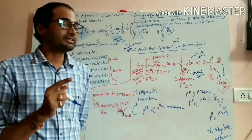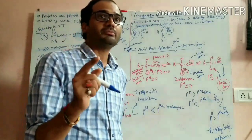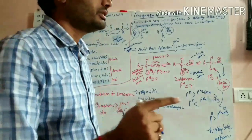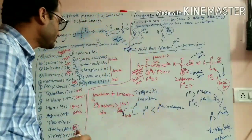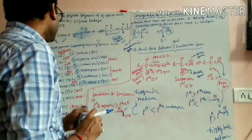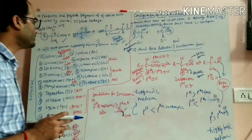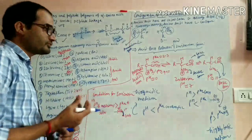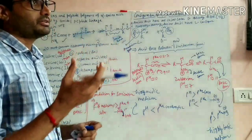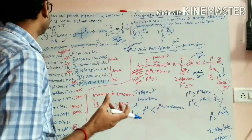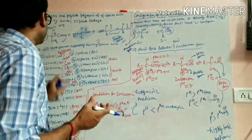These 10 amino acids are known as essential amino acids because our body cannot synthesize them in adequate amounts, or cannot synthesize them at all. The remaining 10 amino acids are known as non-essential amino acids, because our body is capable of synthesizing them in required or adequate amounts.